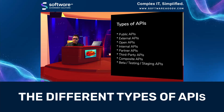So what different types of APIs are there? When evaluating the security of your APIs, it's important to remember that there are several types of APIs that you might be using. Some of these you are probably very well familiar with, and you can see them in the list right here.